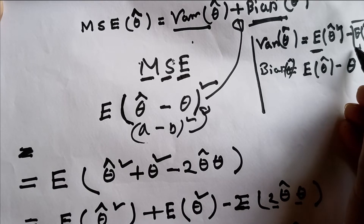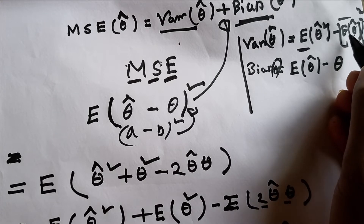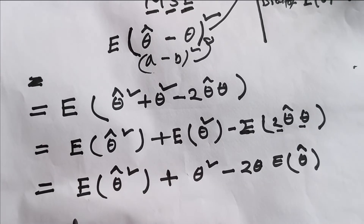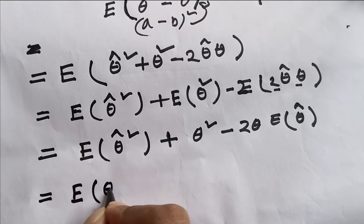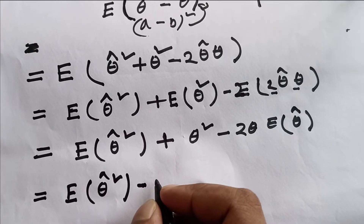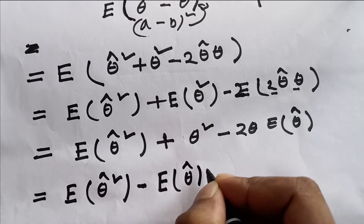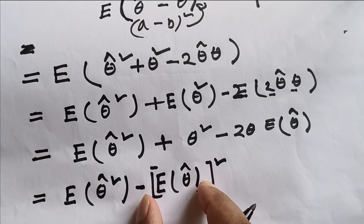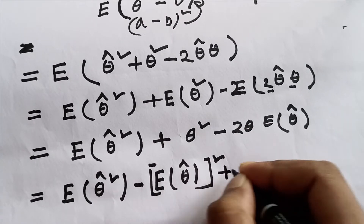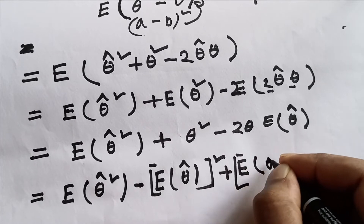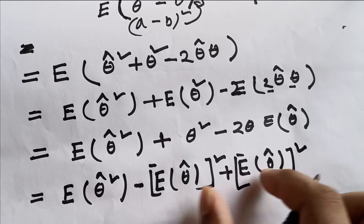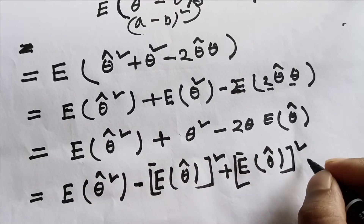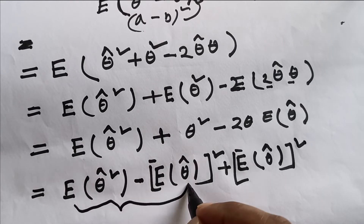We also need the term minus expected value of theta-hat, whole squared, which is not directly in our expression. So we add and subtract expected value of theta-hat, whole squared. This lets us cancel terms and rewrite the expression so that we can identify it as the variance of theta-hat.